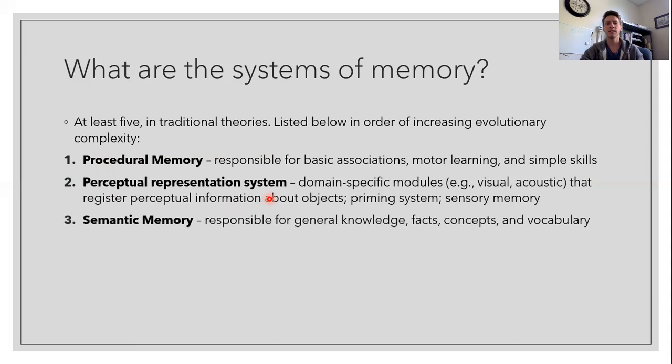We will talk a little bit more about the next few systems. So semantic memory, this is simply responsible for general knowledge, facts, concepts, and vocabulary. The thing about semantic memory is you don't really need to remember the specific learning episode in which you learned the information. So for example, you know that the sky is blue, but you don't have to remember that you were told that the sky is blue in order to know that the sky is blue.